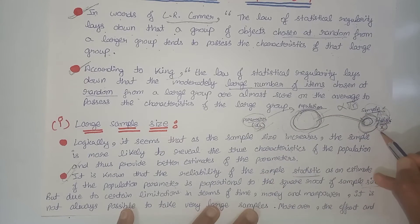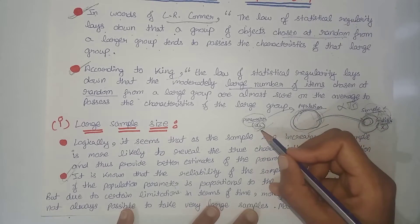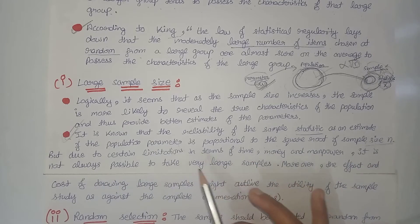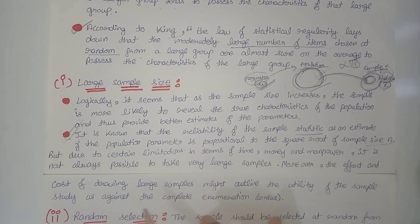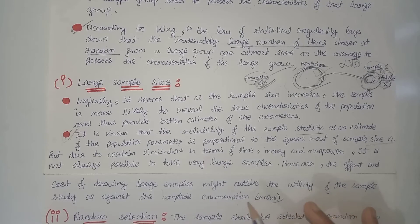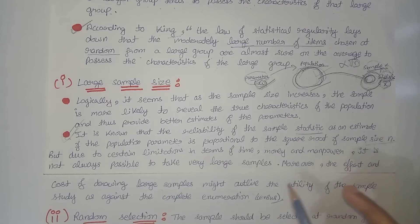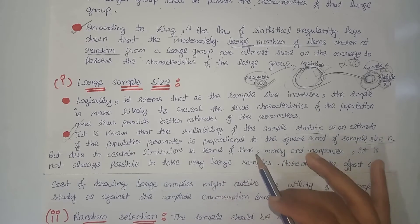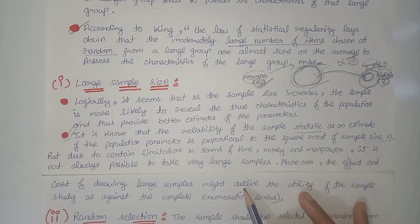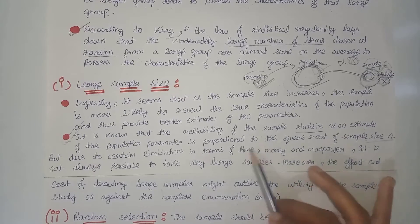However, due to certain limitations in terms of time, money, and manpower, it is not always possible to take very large samples. Moreover, the effort and cost of drawing large samples might outweigh the utility of the sample study compared to complete enumeration. We use the sample method instead of complete enumeration because it requires less time, less money, and less manpower. But if we increase the sample size too much, we need more time, money, and manpower, and then the sample method becomes no more beneficial than population study.